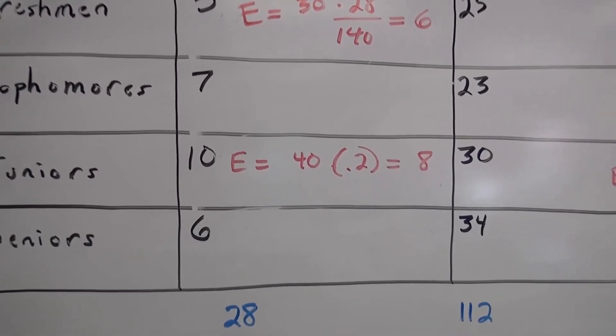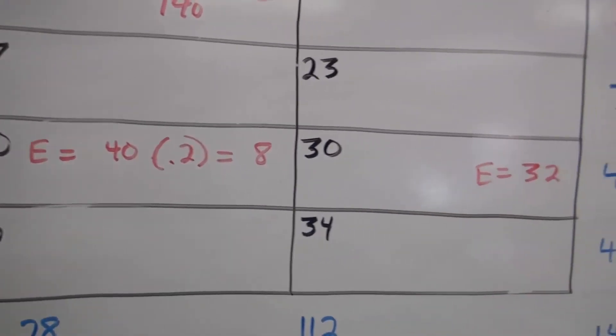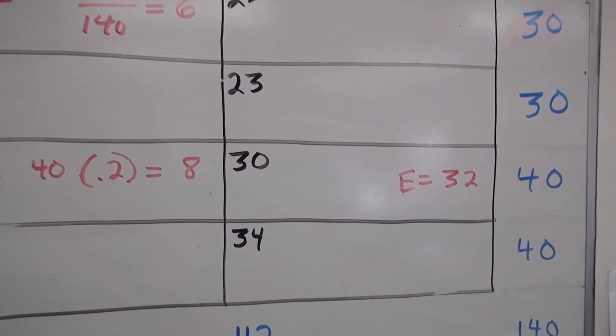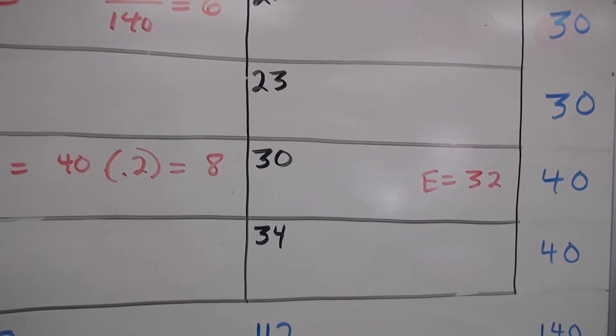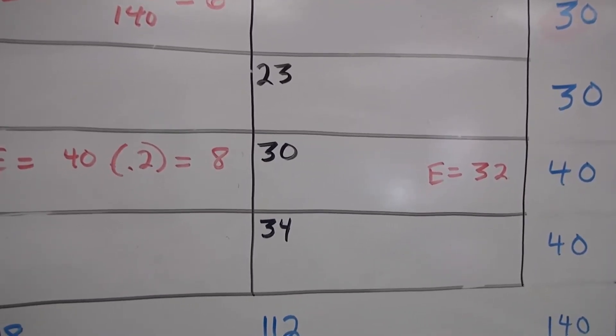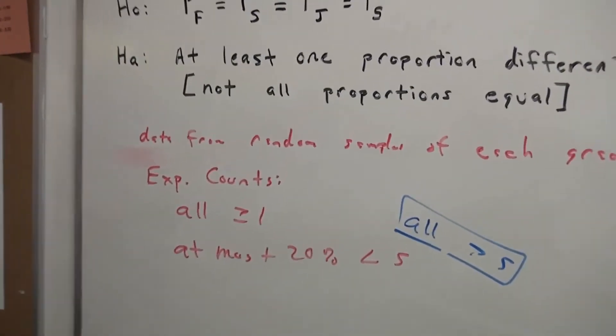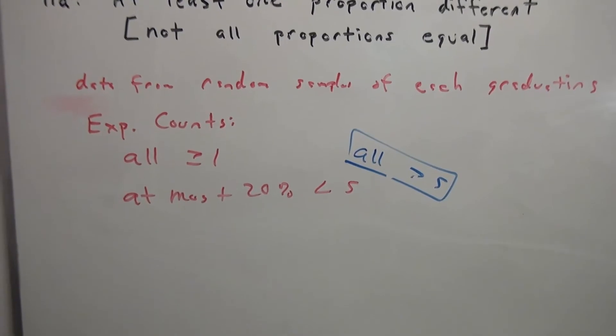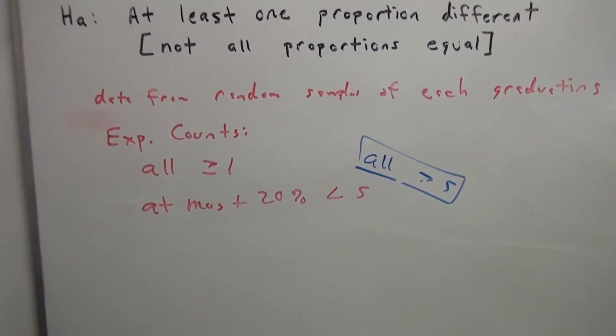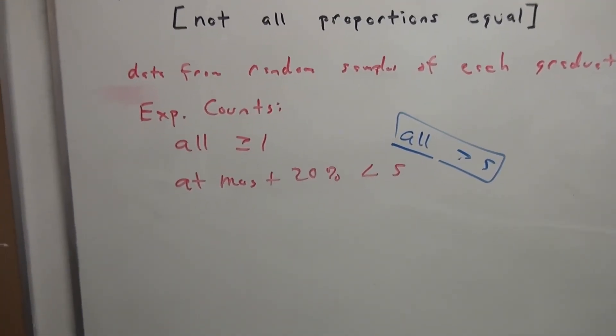Now that we know the expected count is 8 in the juniors cell, the expected number of students not failing must be 32, because those two cells have to add up to 40. We then confirm the conditions: the data came from a random sample and all expected counts are greater than 5.